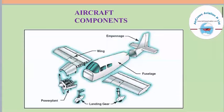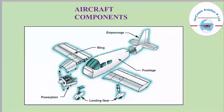Let's get started with today's presentation on aircraft components. We generally know about different components like the power plant, which is the aircraft's engine, the wing section, the empennage or tail section, the fuselage, which is the central body, and the landing gear. However, we are not yet aware of the internal structure of these different components.